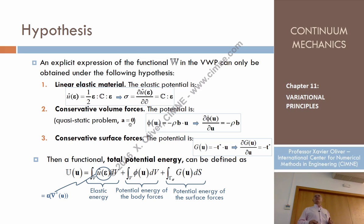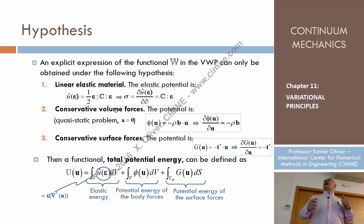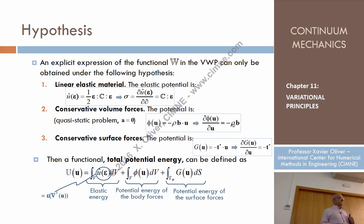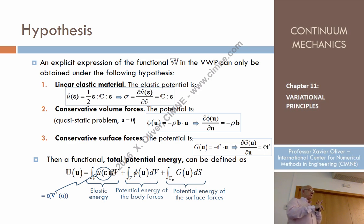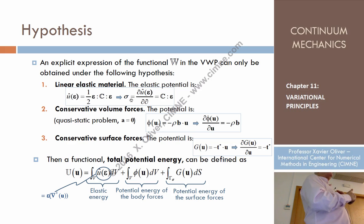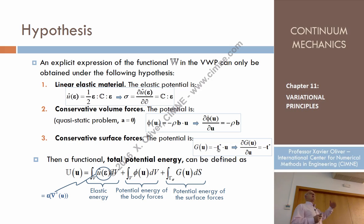Second, assume a quasi-static problem, so the accelerations are zero. And on top of that, assume the volume forces come from a potential — that is, they are conservative volume forces. So there is a potential phi of U whose derivative with respect to U equals minus rho times B. And third, let's assume the surface forces T are also conservative, coming from a potential G, so the derivative of G with respect to U equals minus T. These are three limitations.